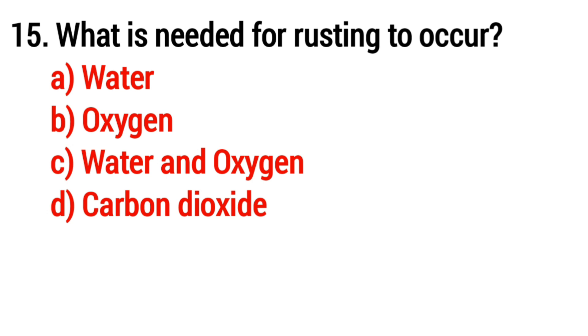Question number 15: What is needed for rusting to occur? Answer: option C, water and oxygen.